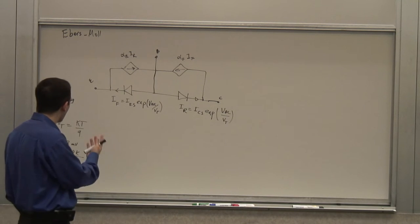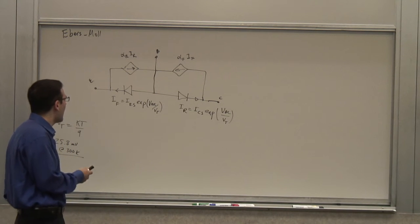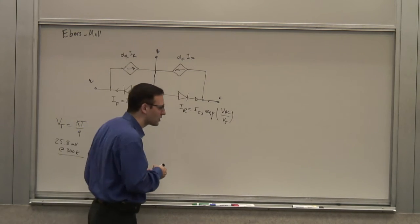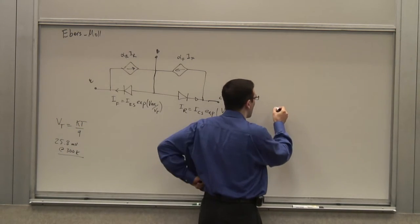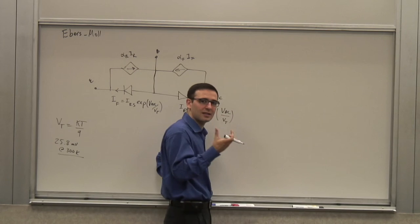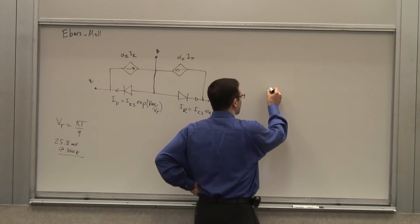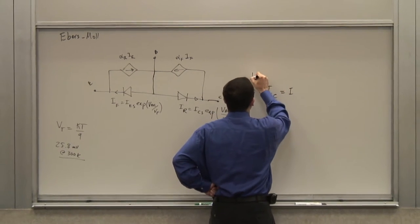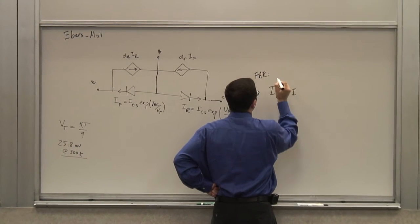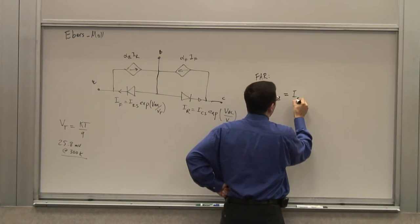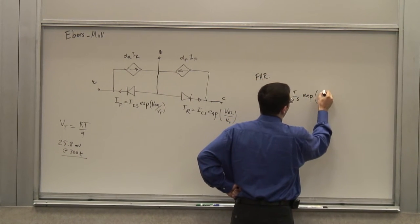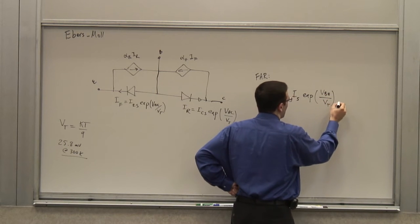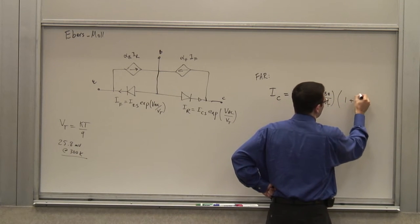This is a nonlinear, general model. In the forward active region, due to the Early effect, we had a secondary term. So IC in the forward active region was IS times e^(VBE/VT), with a second correction term for the dependence on the collector-emitter voltage.